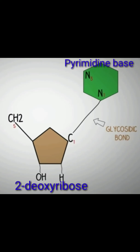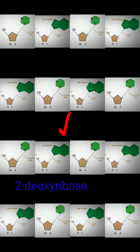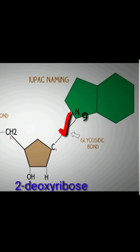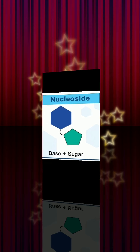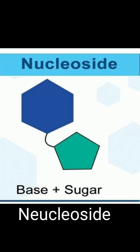The first carbon of deoxyribose sugar joins with nitrogen one of a pyrimidine base, or nitrogen nine of a purine base, by a glycosidic bond, to form the structural unit that is called a nucleoside.